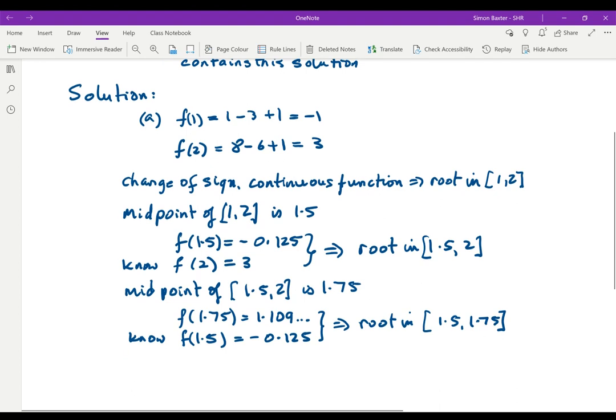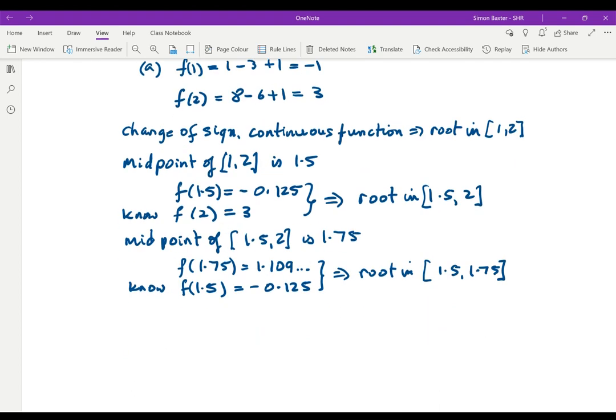Not quite as far as we want to go yet. So interval bisection to equal halves. We need the midpoint. The midpoint of [1.5, 1.75] is 1.5 plus 1.75 divided by 2 which is 1.625.